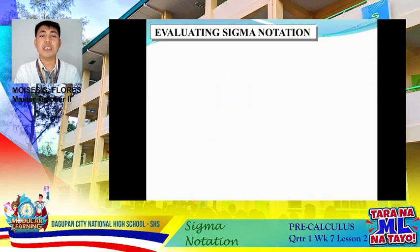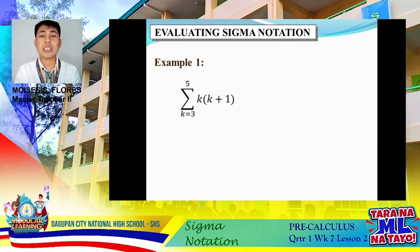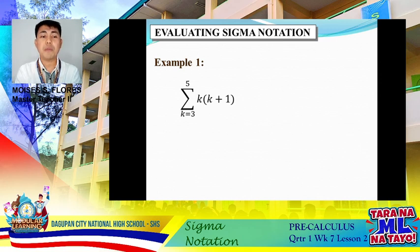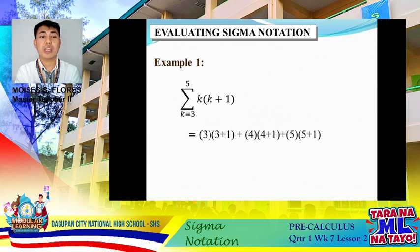Let's evaluate sigma notation. In our first example, we are asked for the summation of k(k+1) as k goes from 3 to 5. All we need to do is substitute the values of k starting from our lower bound of 3, followed by 4, then 5, stopping at the upper bound of 5. All variables k are substituted with values 3 through 5.